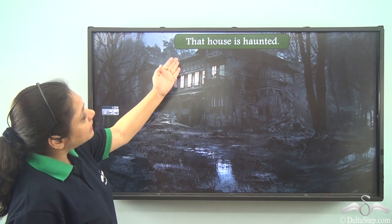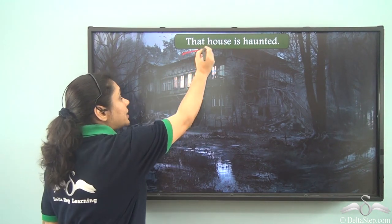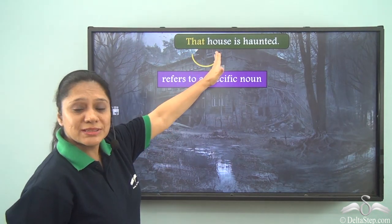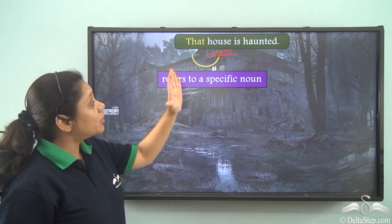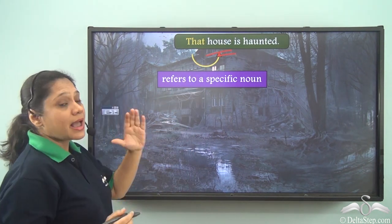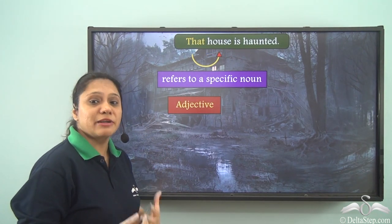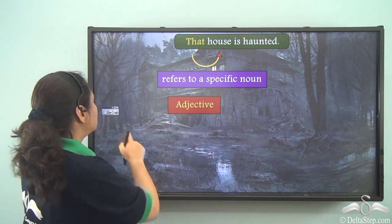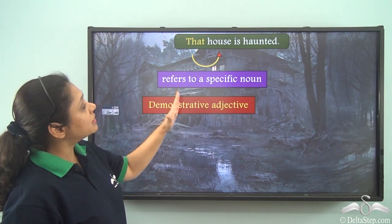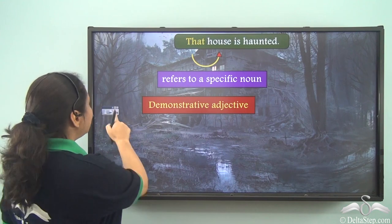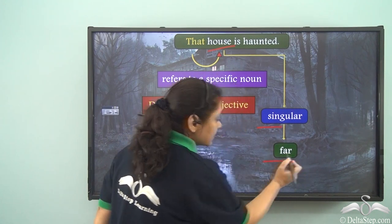Now let us read this sentence: 'That house is haunted.' In this sentence, the word 'that' is referring to a specific noun — the noun 'house.' It is describing a particular house, hence the word 'that' is an adjective. Now because it is referring to a particular noun, it is known as a demonstrative adjective.